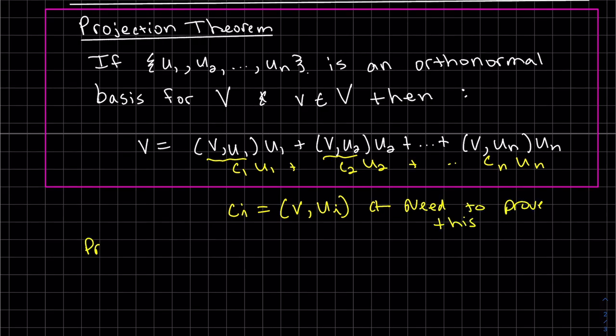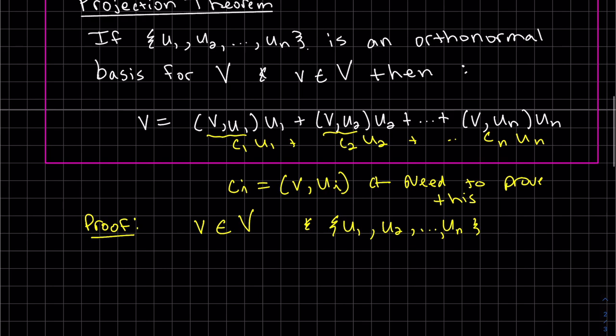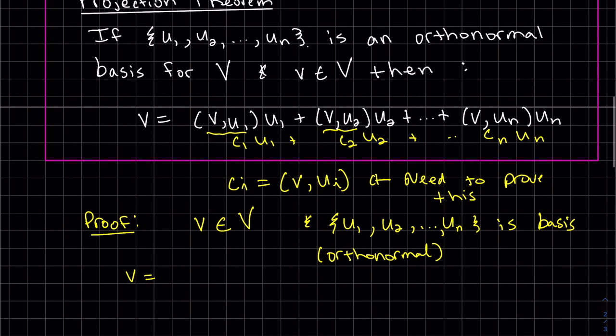If I can prove that each constant is this inner product, then I'm done. I don't need to do it for one and two; if I prove it for i being between one and n, I've proved it for all of them. So here's our proof. What do we have so far? We have v (little v) is in the inner space, and we have u1, u2, ..., un is our orthonormal set.